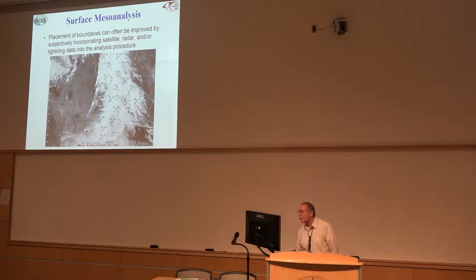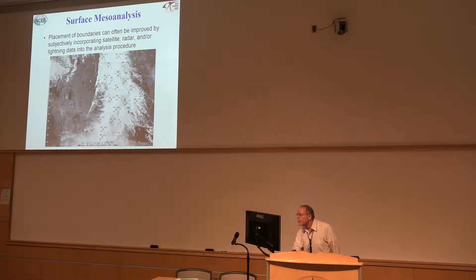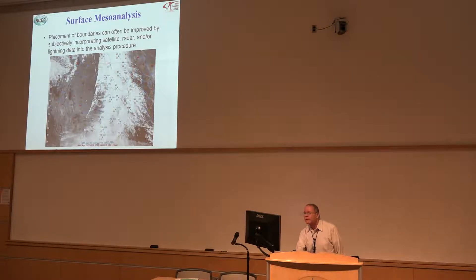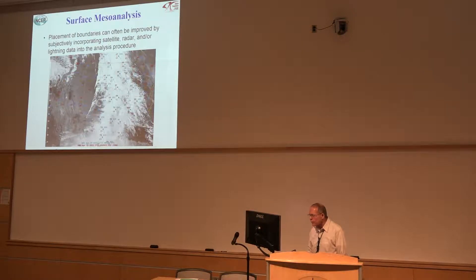Here's another example — where's the dry line? In this particular case, if I don't have Mesonet data, I've got a 36 dew point at Amarillo, a 37 down at Lubbock, and a 63 at Childress. I know it's somewhere in here, but if I see this satellite imagery, it gives me an idea of exactly where it is and can help me with the placement of some of the boundaries.